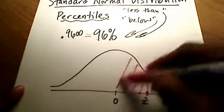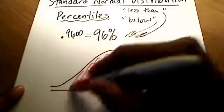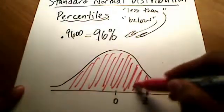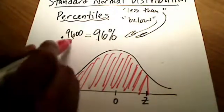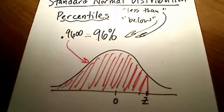That means everything kind of shaded to the left. 96% is all of this area shaded to the left of over here. So we're looking for, what is the Z score that corresponds to 96th percentile?